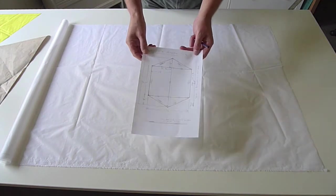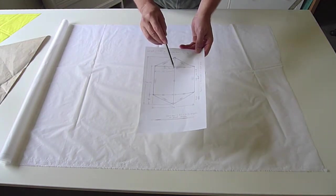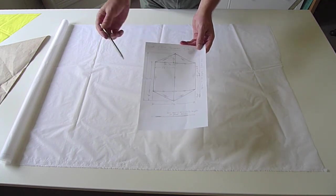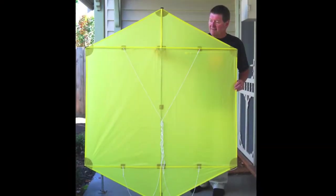So this plan is for a 1.7 meter rokaku and I'll be dealing with this top triangle as the finished kite.